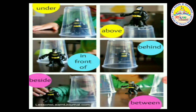In the third picture, where is Batman? It's in front of the glass. You will make a sentence. The Batman is in front of the glass.